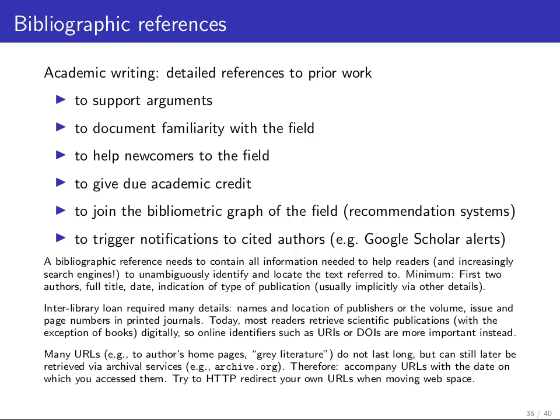What should a bibliographic reference contain? It should contain all the information needed to help a reader and also a search engine to unambiguously find where to get the text from. As a minimum, this includes at least the first two authors. Sometimes there's a very large number of authors — one of my colleagues regularly publishes reports with more than 20 authors, and for some collaborations like the discovery of the Higgs boson, there were around 3,000 authors on one paper — so you have to abbreviate the list of authors.